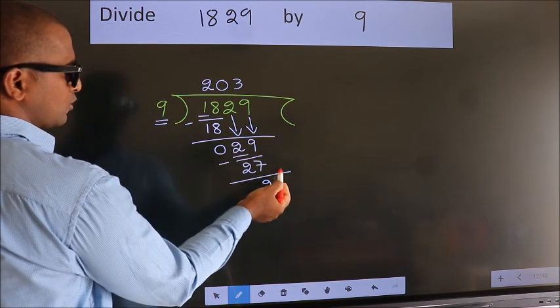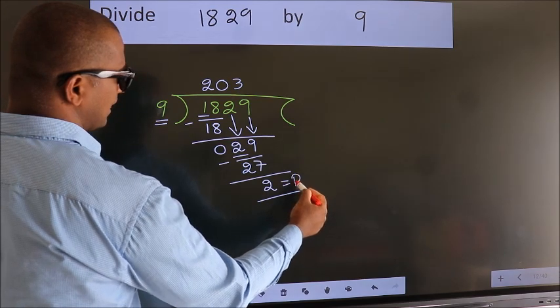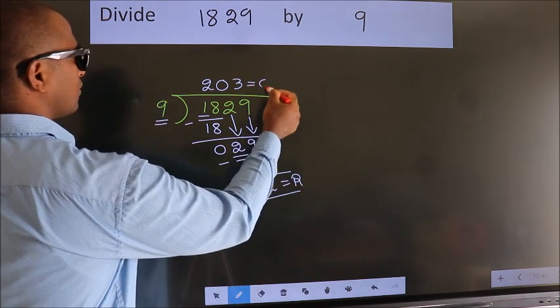No more numbers to bring down, so we stop here. This is our remainder. This is our quotient.